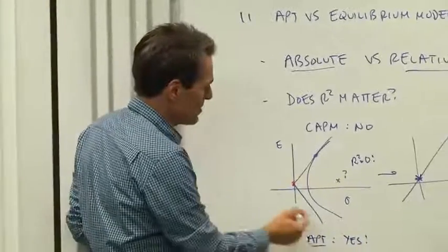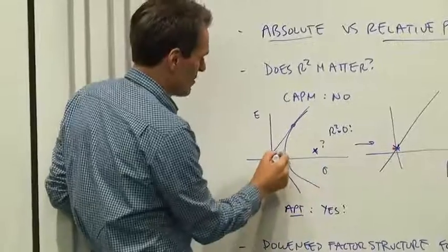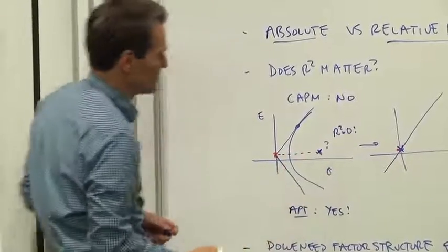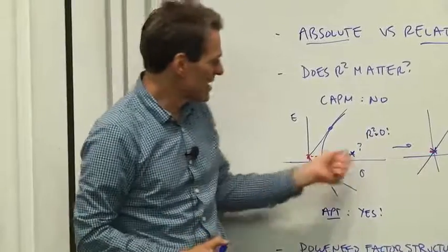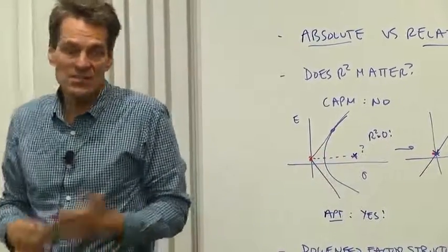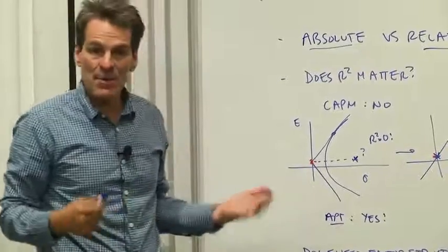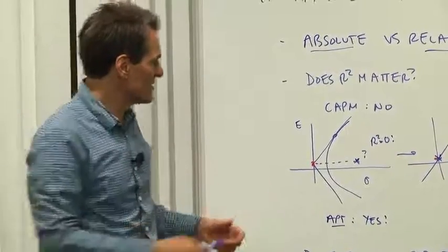In fact, it is the greatest pride of the capital asset pricing model to deal with R squared equals zero securities. Here's an example. Suppose you had a security X here that was paying the same return as the risk-free rate but had a huge standard deviation.